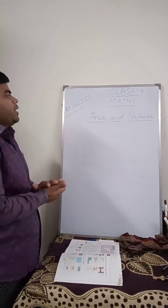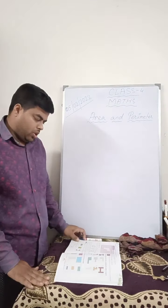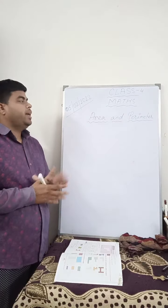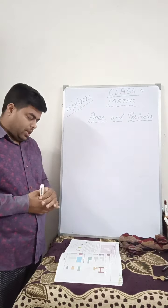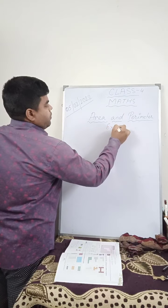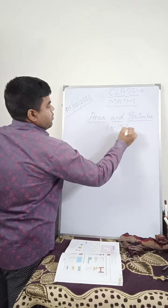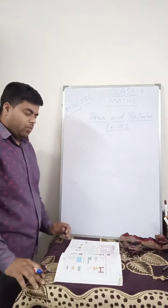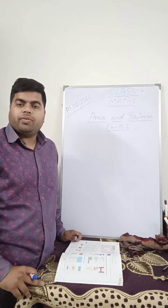Good morning students. This video is for class 4 Maths and today we will continue with area and perimeter. Let us start with exercise 15.2. In the last class I have already explained 15.1. Today we will start with 15.2.